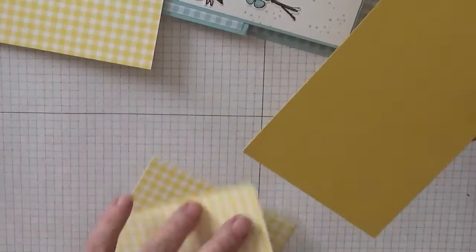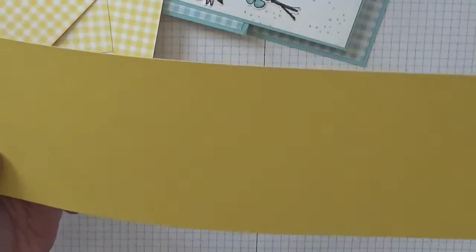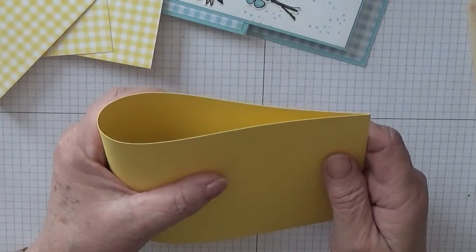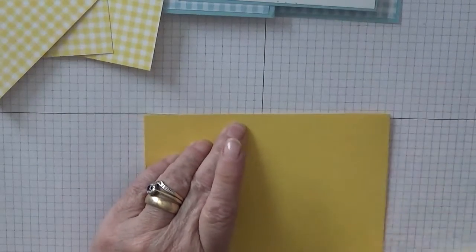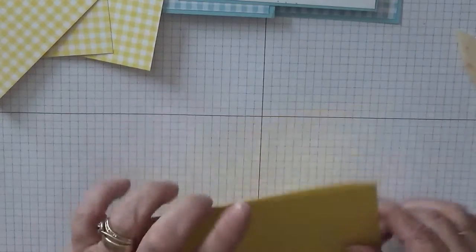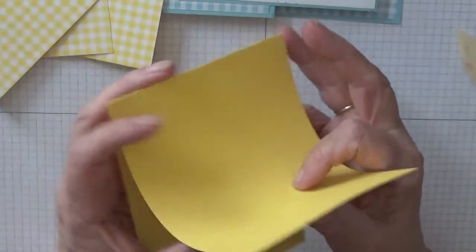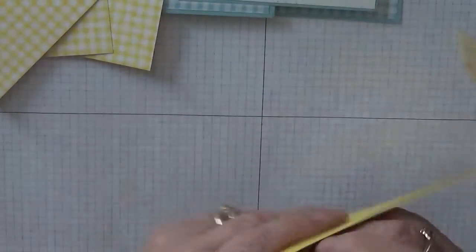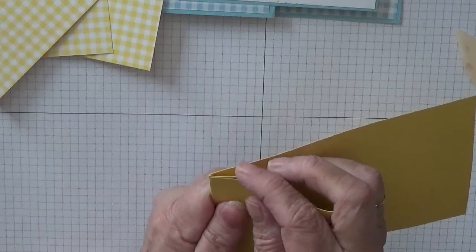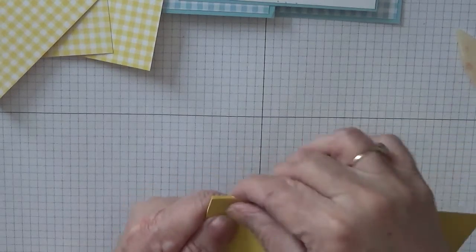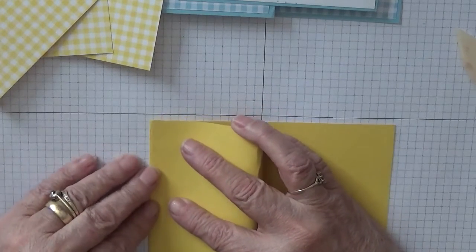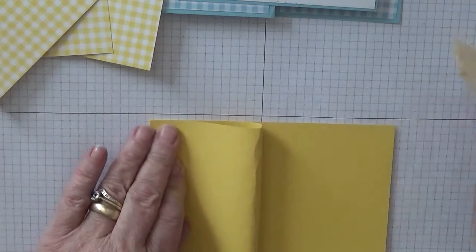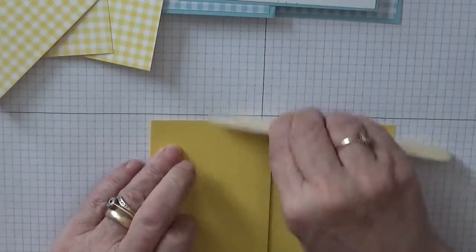So first of all, let's fold this. I'm not going to score, I'm just going to fold it. And then fold this in half again to meet the score line.